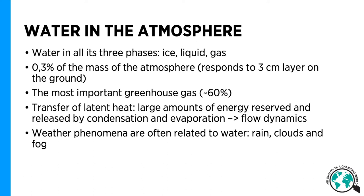Only 0.3% of the mass of the atmosphere is water, which corresponds to a 3 cm layer on the ground if all water of the atmosphere were condensed to the ground. However, water in the atmosphere is crucially important. First, water is the most important greenhouse gas, responding to 60% of the greenhouse effect and thus enabling life on Earth.